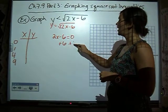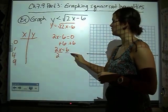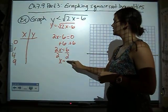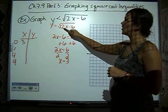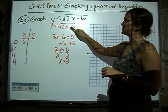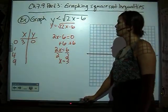if we add 6, 2x equals 6, divide by 2, x is going to equal 3. So when x is 3, we plug x in here, 3 times 2 is 6, minus 6 is 0, the square root of 0 is 0.